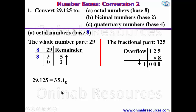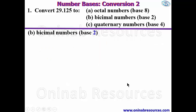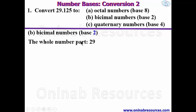That is the answer for example 1a. Now we go to 1b: bicimal numbers. We've already stated that bicimal numbers are base 2 with the bicimal point. Since this is a decimal number with a decimal point, the equivalent will be bicimal in base 2. We start with the whole number part again.